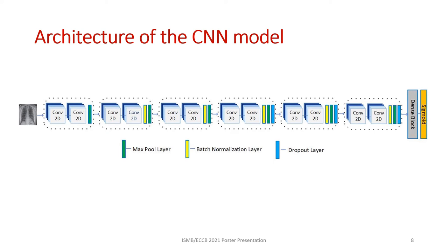This is the architecture of our proposed model, consisting of six convolutional blocks with 16, 32, 64, 128, 256, and 512 filters in each. Batch normalization and max pooling layers were added after each convolutional block. Dropout layers were added after the last three convolutional layers, and a dense block followed the convolutional blocks.